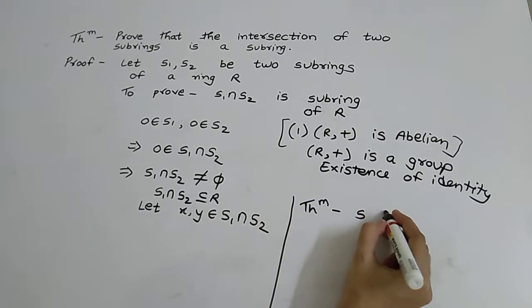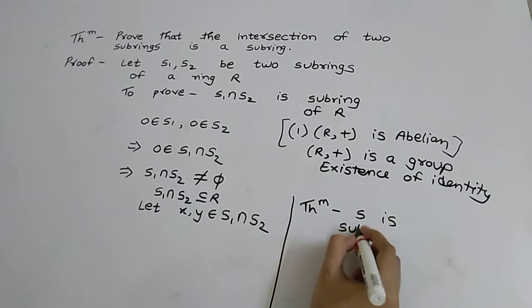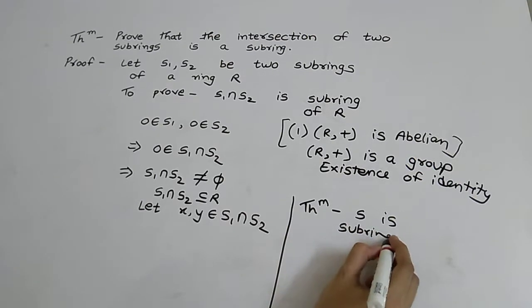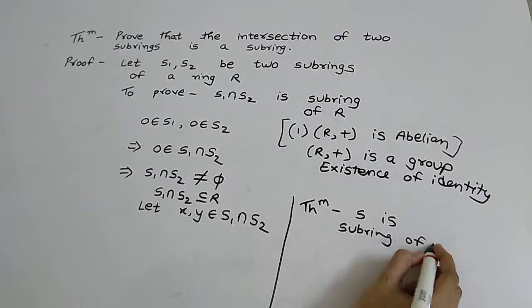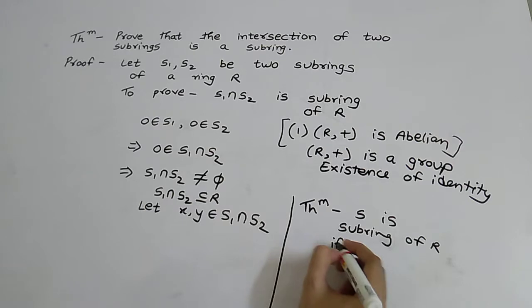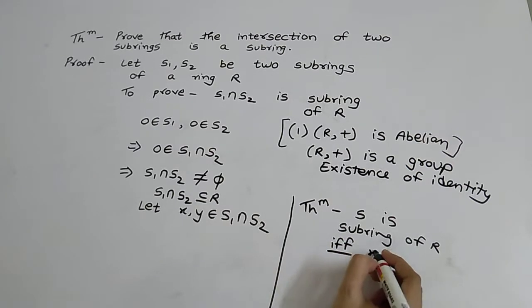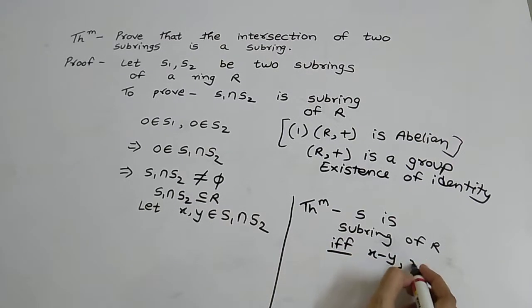S is a subring of R if and only if x minus y and x into y belongs to S for all x, y belongs to S.